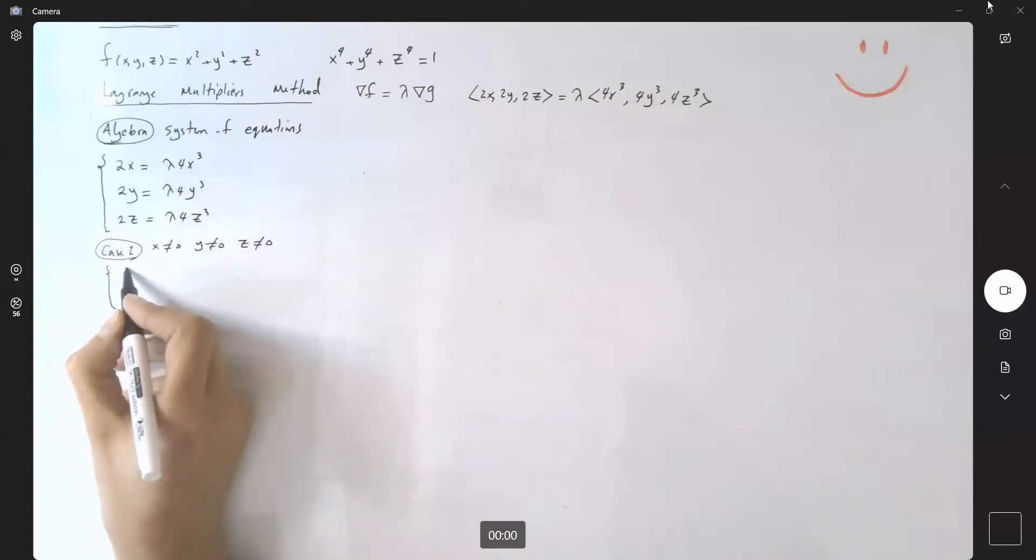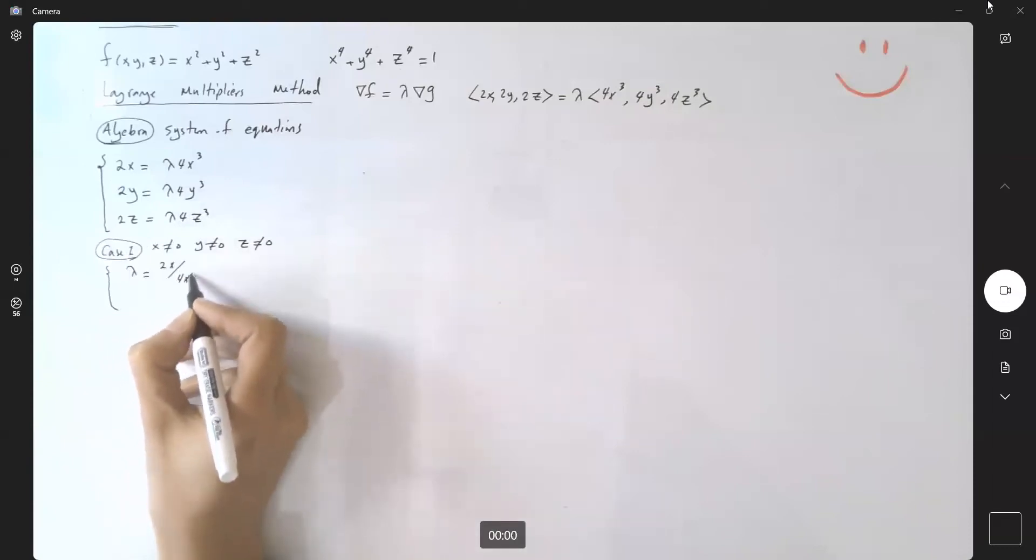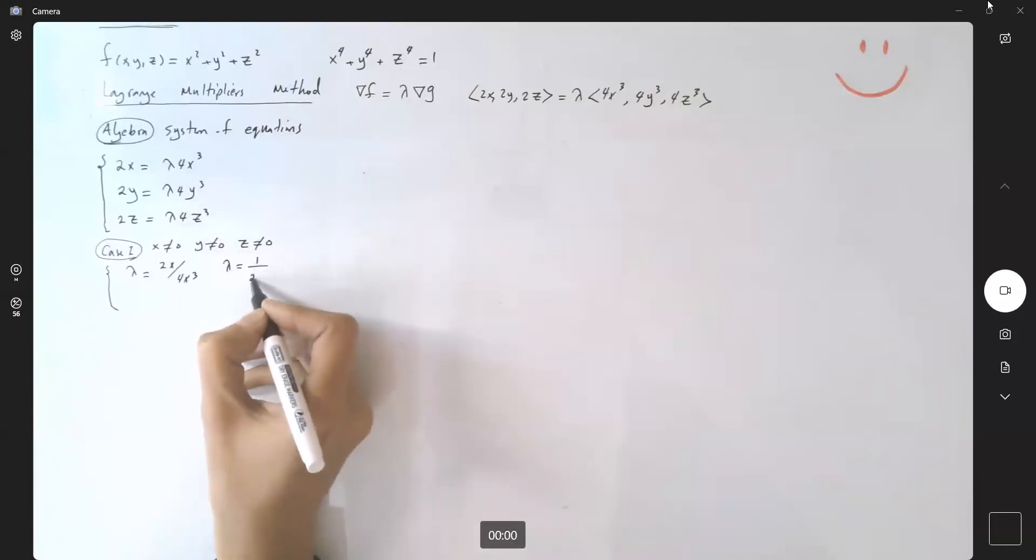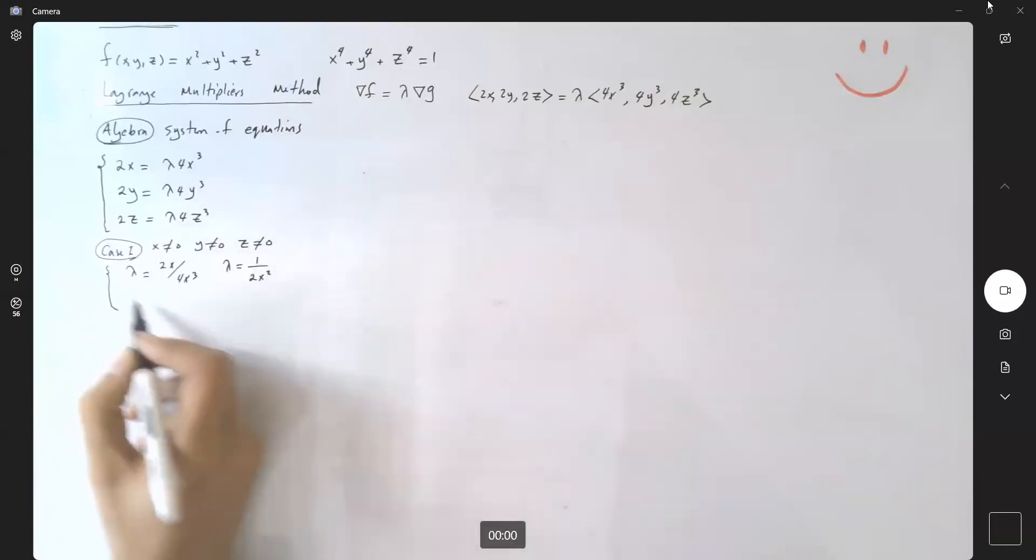From the first case, you get lambda equals 2x divided by 4x³, or lambda is 1/(2x²).